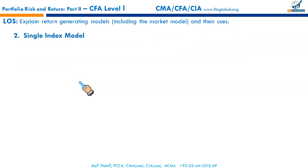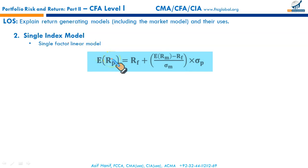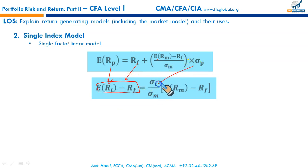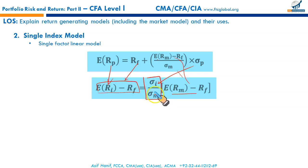Next we have the single-index model. It is a single-factor linear model that uses the market factor as the only factor. This model is essentially derived from the capital market line — the model equation is a rewrite of the CML. The expected return on the portfolio becomes the expected return on the asset. RF to the other side gives the excess return, which equals the volatility of the asset's return divided by the volatility of the market portfolio. This ratio is the factor weight or loading, and it shows the ratio of security risk to market risk.